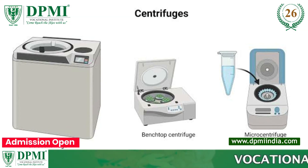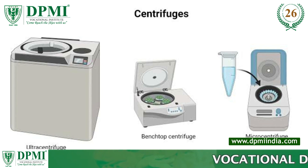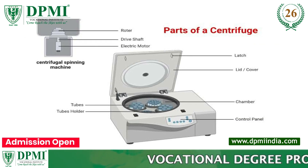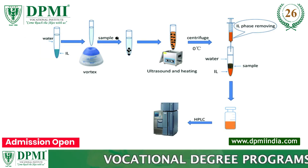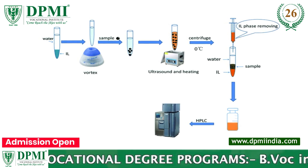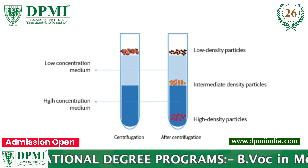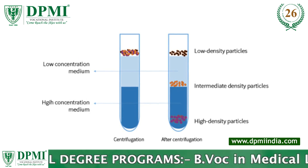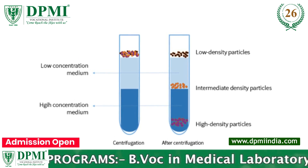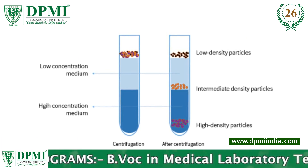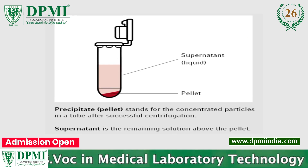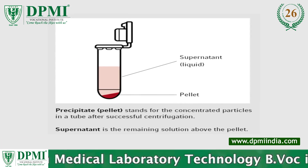Centrifugation is a technique used in laboratories to separate components of a mixture based on their density. The centrifuge is a machine that spins a sample at high speeds, creating centrifugal force that causes the denser components to settle at the bottom of the container, forming a pellet, while the less dense components remain in the supernatant.